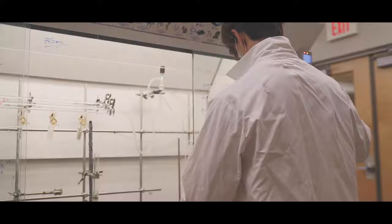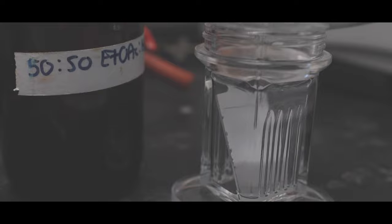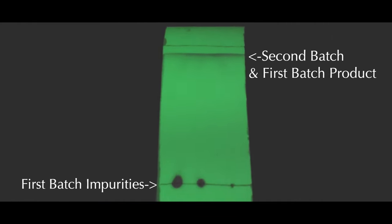To compare the product identities, a silica-based TLC plate was spotted by both the tainted blue product as well as the results of the adjusted procedure and then set in a chamber dipped with a 50-50 ethyl acetate hexane solvent.